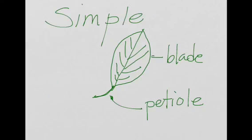Leaf types can be either simple or compound. When you have a simple leaf, you basically have these two parts: the blade and then a petiole. It's very simple. And that will attach to the stem right there at the end of the petiole.